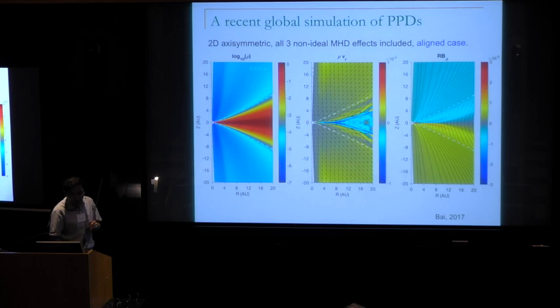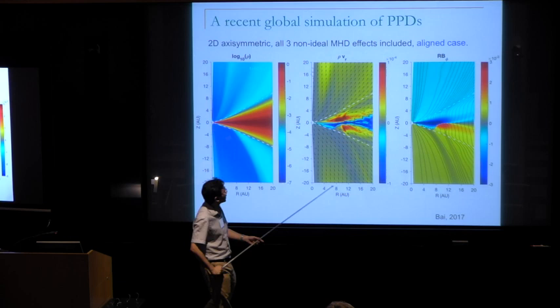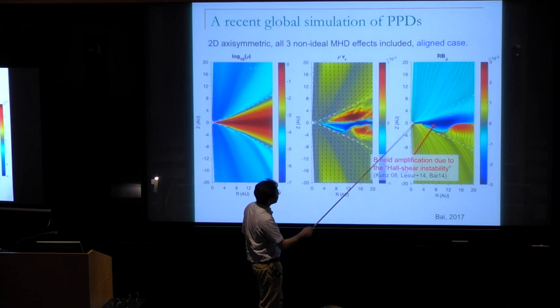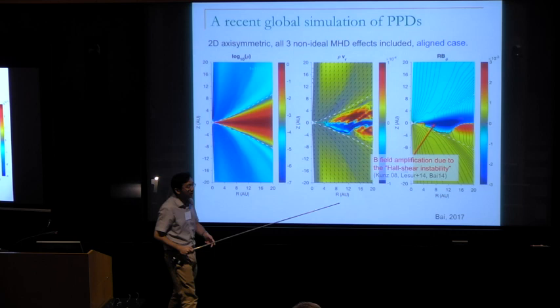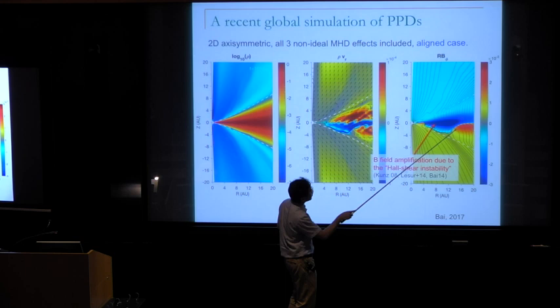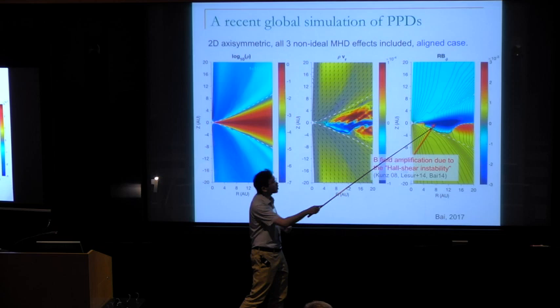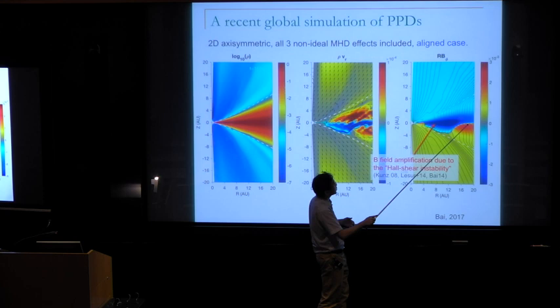Here's a recent global simulation including all three non-ideal MHD effects. Starting with the aligned case where the background field is aligned with rotation. Three panels show density, mass flux, and magnetic fields. The field gets amplified — this is the toroidal field, due to the Hall shear instability, which in the aligned case strongly amplifies the horizontal magnetic field component. In the inner region, B-phi is amplified so much it occupies the entire disk. B-phi must change sign somewhere to get the right wind geometry, so it changes sign at the surface. Toward the outer disk, where Hall is weaker, it changes sign in the mid-plane.